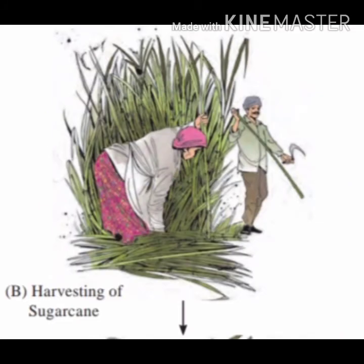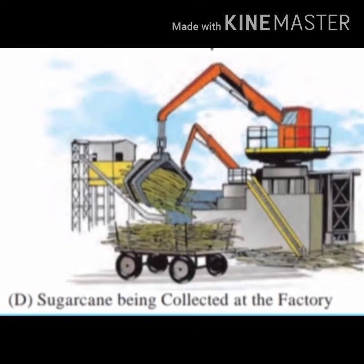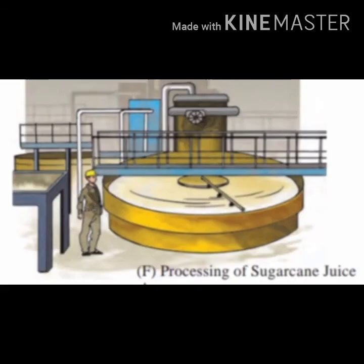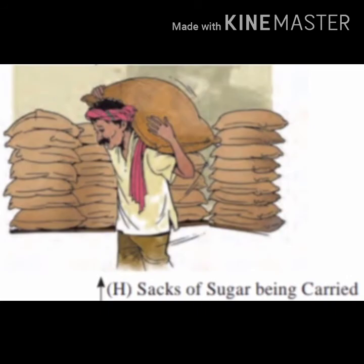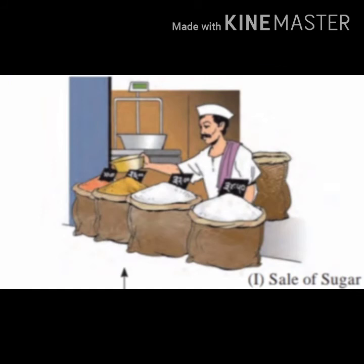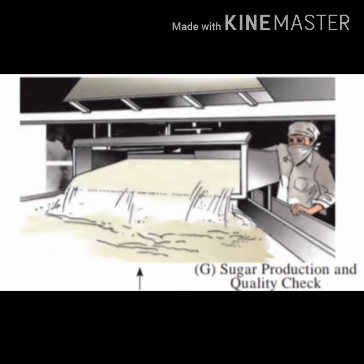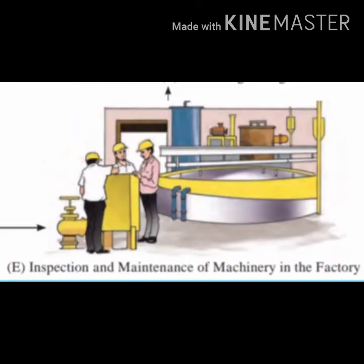Primary occupation is harvesting of sugar cane. Secondary occupation includes sugar cane being collected at a factory, then processing of sugar cane juice, and finally the sugar product. In tertiary occupation it will be transport of sugar cane, sacks of sugar being carried, and sale of goods. In quaternary occupation: quality check and inspection and maintenance of machinery in the factory.